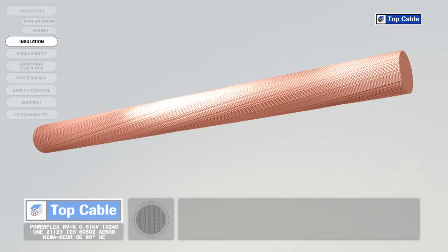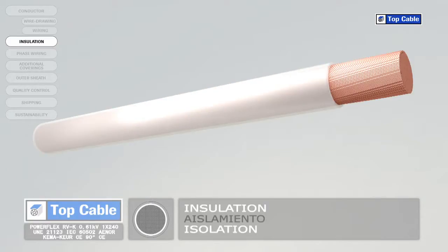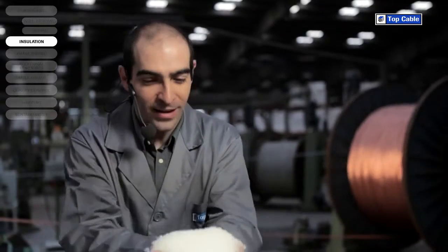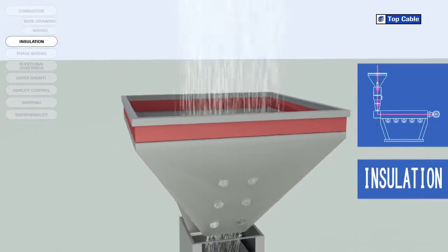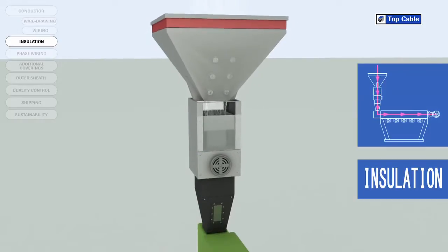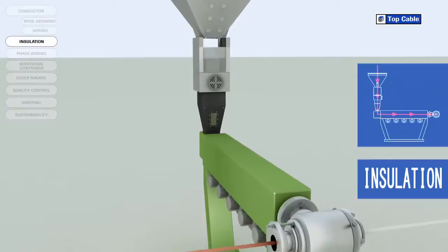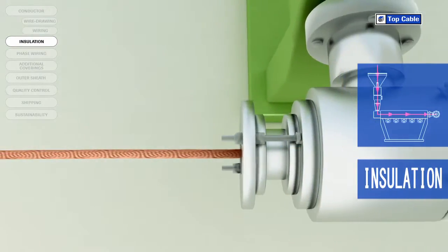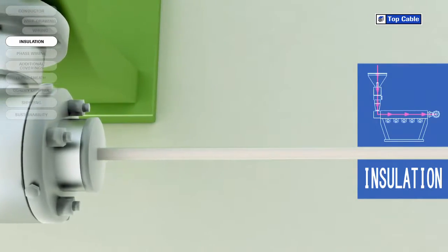The next process in the manufacture of electrical cables is the insulation. This is when we place an insulating cover over the conductor to prevent current leakages. In this process, the insulating material is added by a process of extrusion at high temperature. Several insulating materials may be used – PVC, EPR, XLPE, etc. Different insulation materials may be used depending on the characteristics of the cable required.